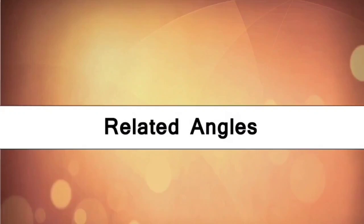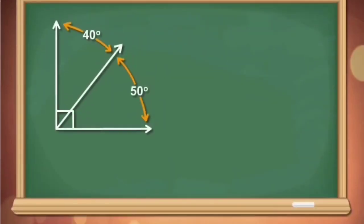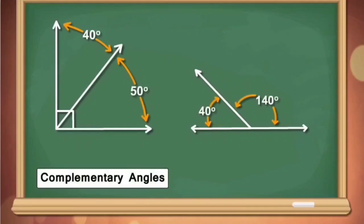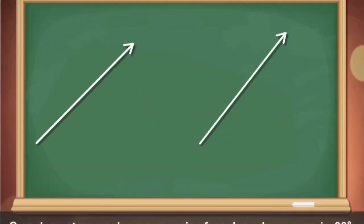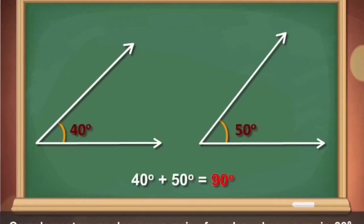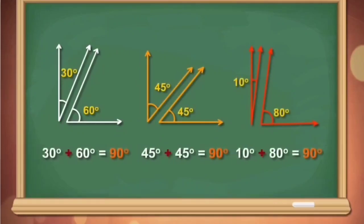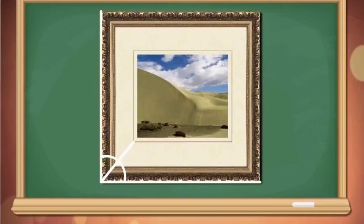Let us now study related angles. Sometimes we have two angles that are connected to each other. Here we are talking about complementary and supplementary angles. Complementary angles are a pair of angles whose sum is 90 degrees. You will observe that the hands of a clock and a picture frame are examples forming complementary angles.